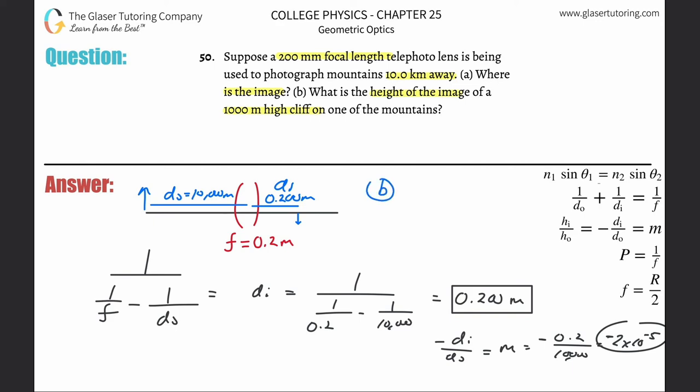I'm going to do the calculation here. This is for letter B. We already found the magnification, so we can do this in a whole bunch of ways. I'll do hi/ho = -di/do, meaning the image height divided by the object height equals negative the image distance divided by the object distance. They're asking us for the height of the image, so simply take this value and cross multiply.